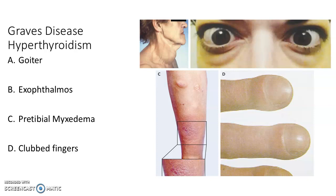Another hallmark of Graves' disease is pre-tibial myxedema, where you get skin changes around the tibia with extra swelling there, and extra swelling in the fingers at the distal ends that can present as clubbed fingers.